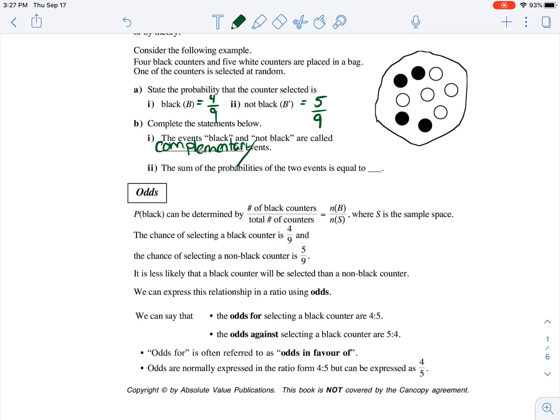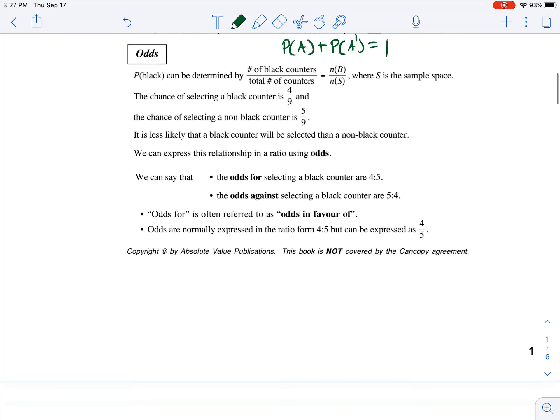And the sum of the probabilities of the two events is equal to one. And we remember that from the previous lesson. The probability of A plus the probability of the complement of A sums to one.